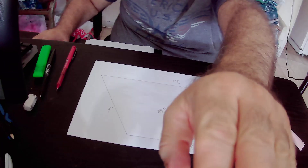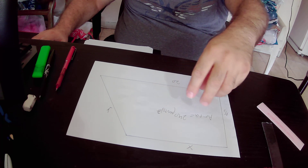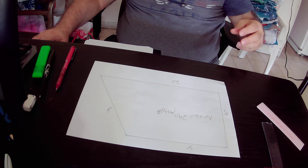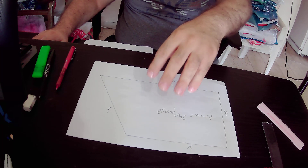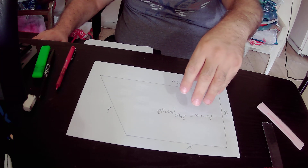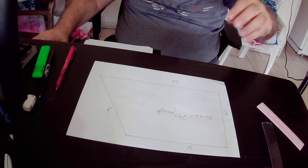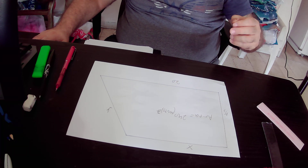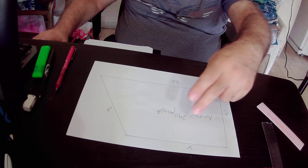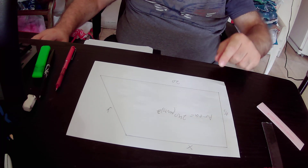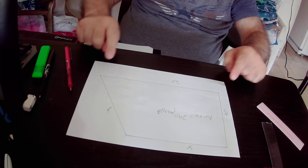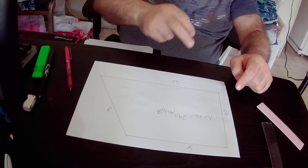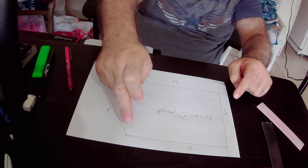Hello. In this lecture we will find the values of x and y in the white shape. We know that the area of this white shape is 240 units squared. We also know that the width of this white shape is 15 units and the length is 20 units, and we want to find out the value of x and y.